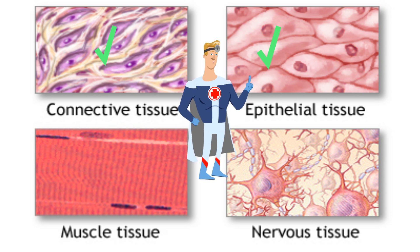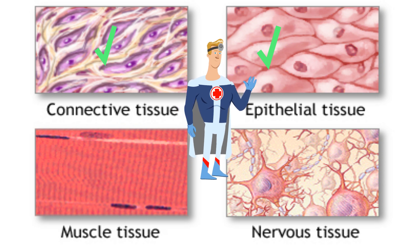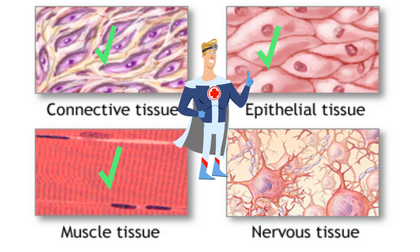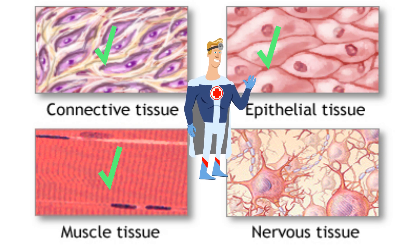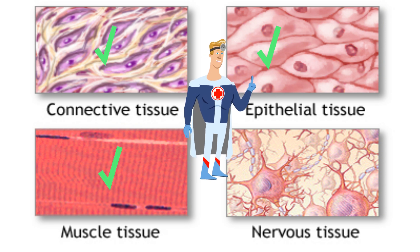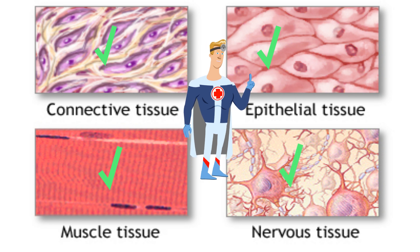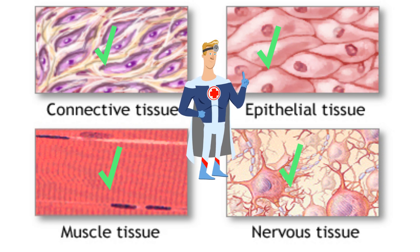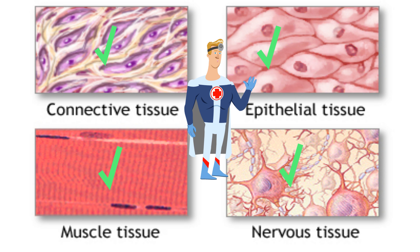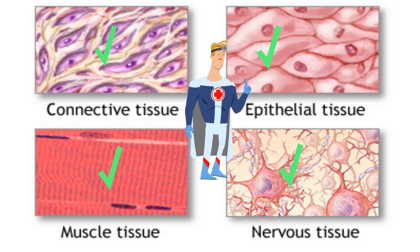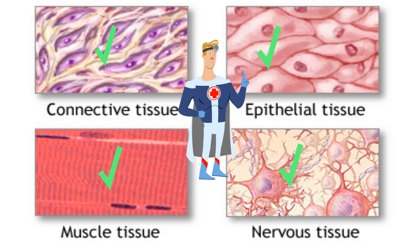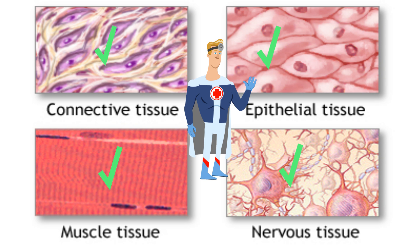There are three types of muscle tissue: skeletal, smooth, and cardiac. And finally, nerve tissue is composed of specialized cells which receive stimuli and also conduct impulses from different parts of the body.